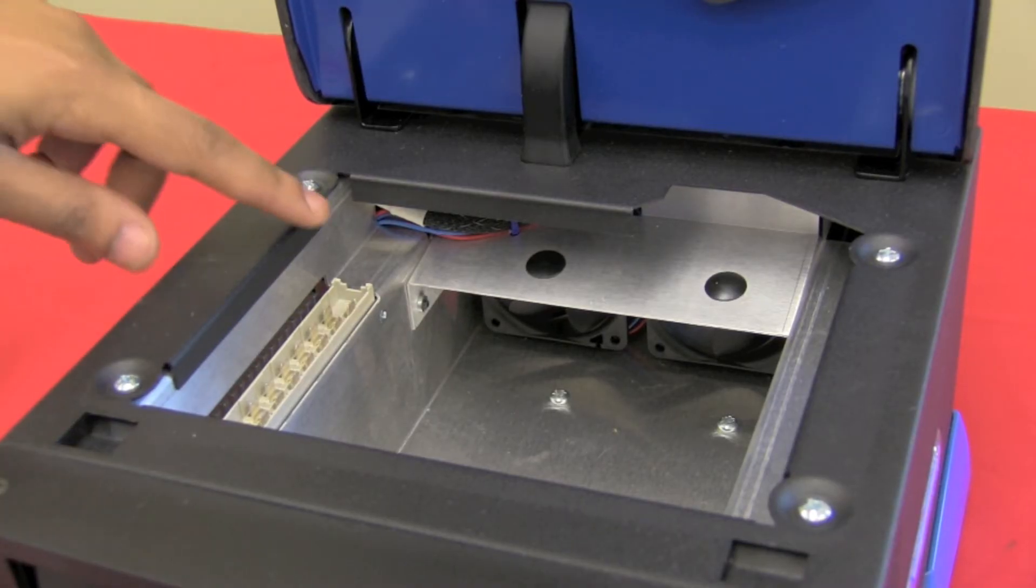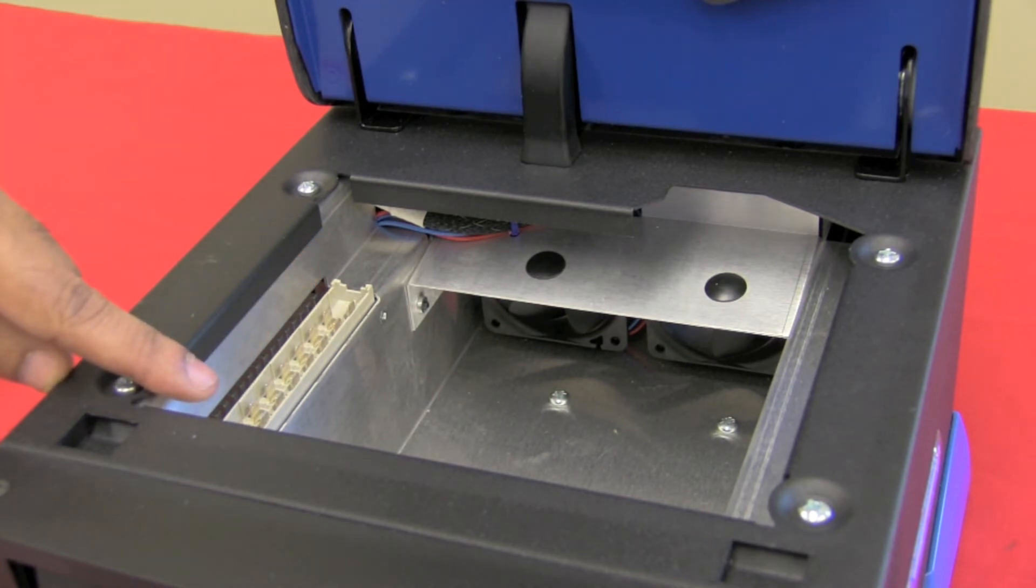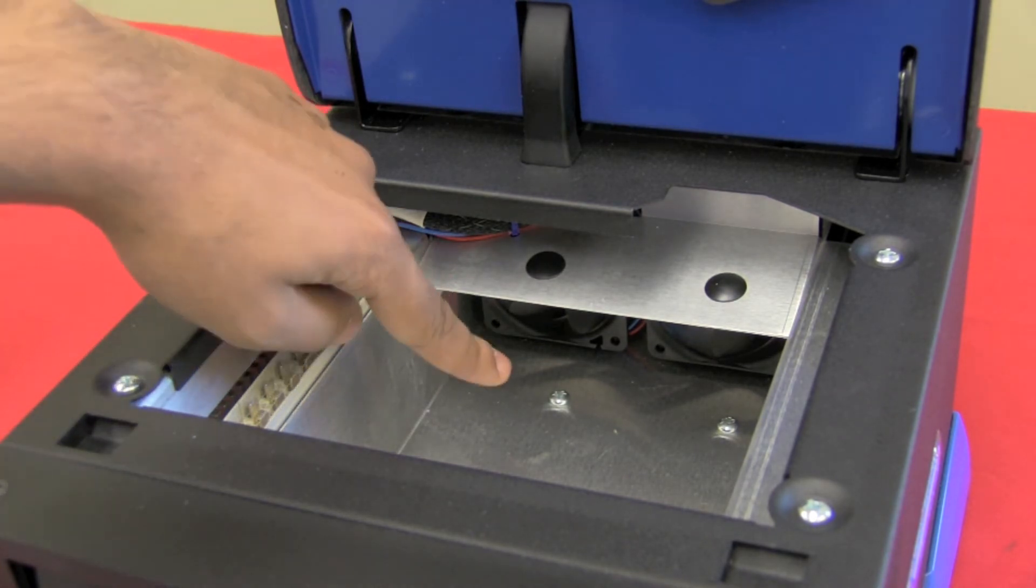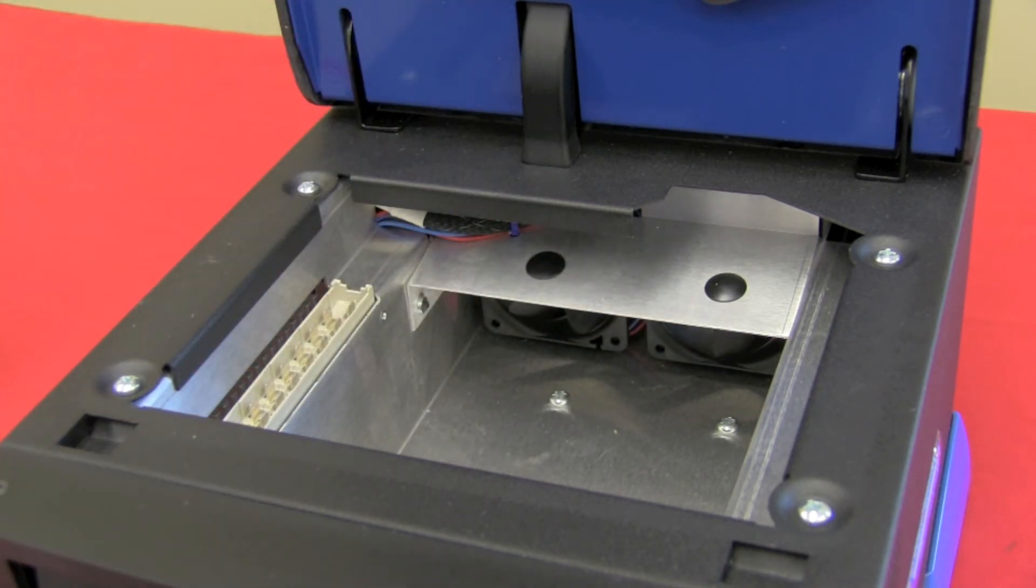Taking a look inside, we can see the connectors for the block here, and it's pretty simple inside. We've got the cooling fans at the back, and that's about it for the inside of the instrument. Very simple.